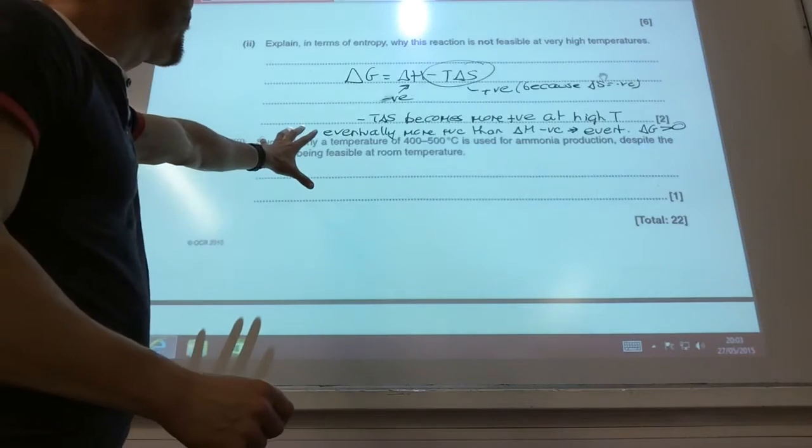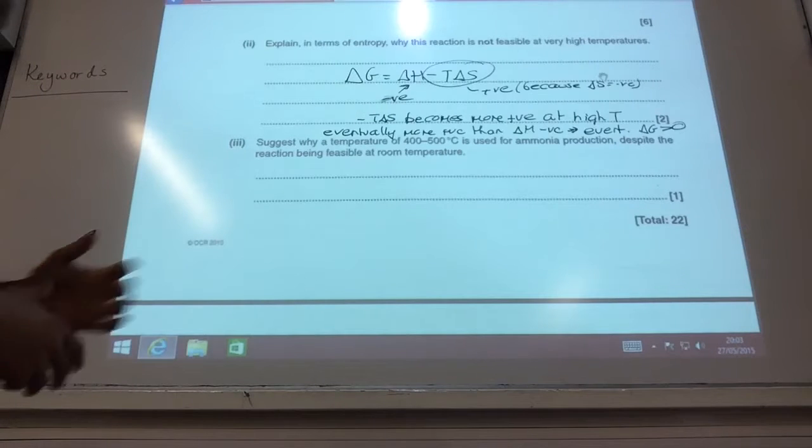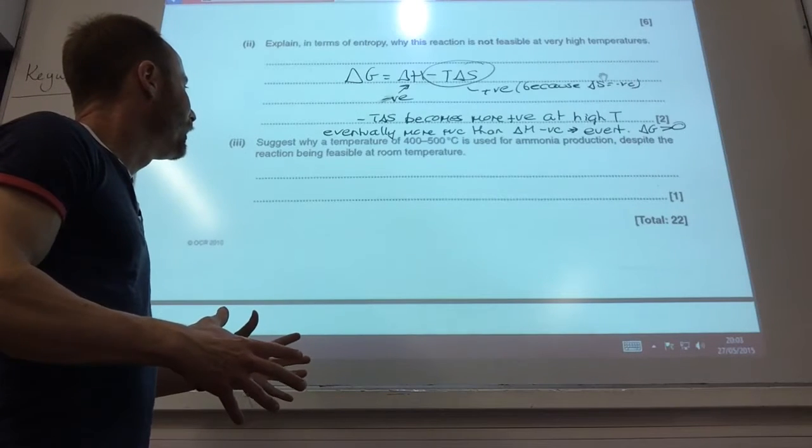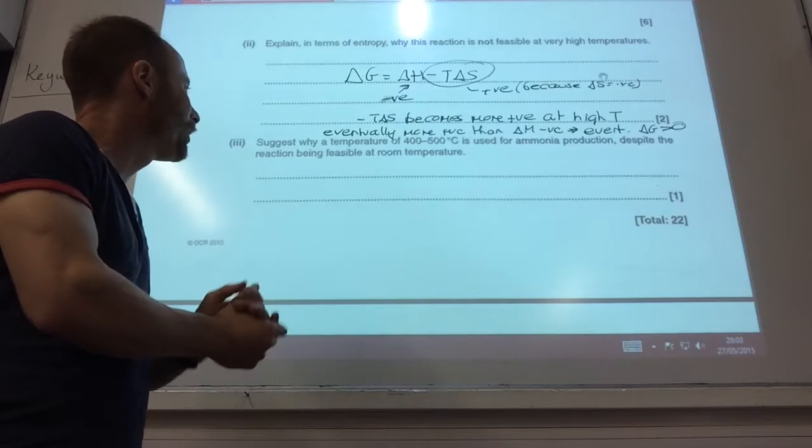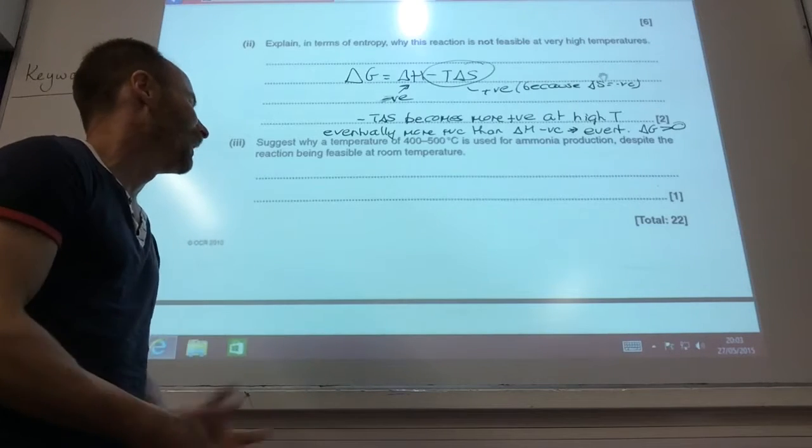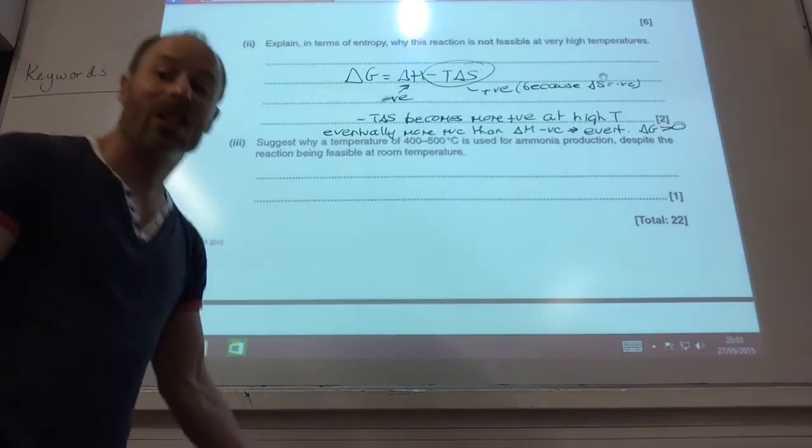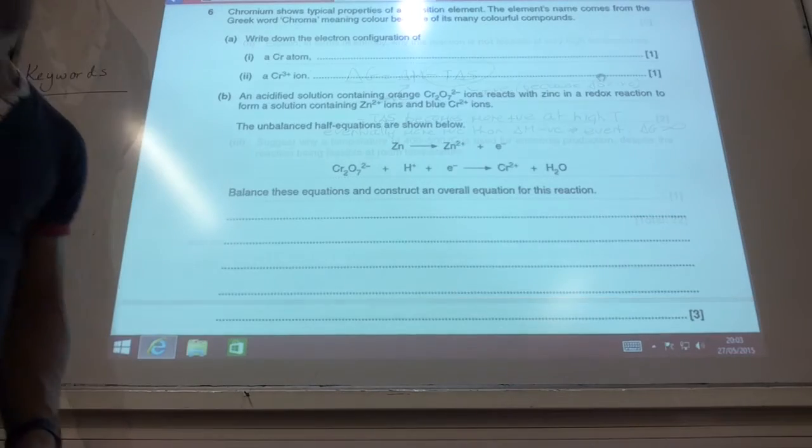Right, why is a temperature of 400 to 500 degrees C generally used, despite it being feasible at room temperature? It's because the rate is probably incredibly slow. Well, it is incredibly slow at room temperature. So the rate is too slow, the activation energy is too high.